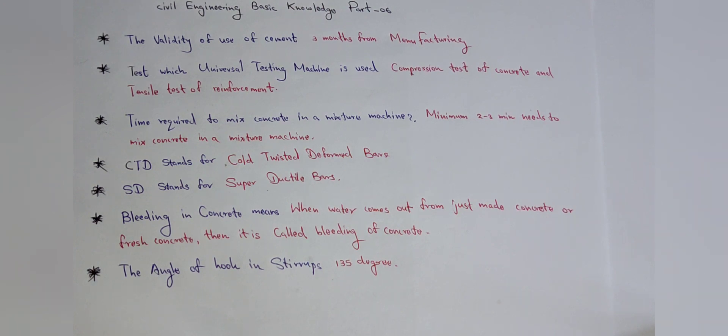CTD stands for cold twisted deformed bars. CTD stands for the bar type called cold twisted deformed bars. Then SD stands for super ductile bars.